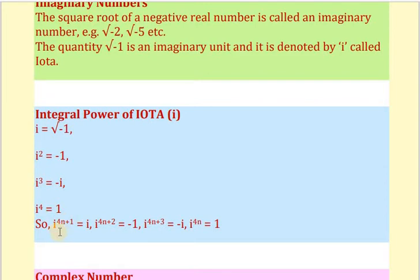Similarly, we can get i to the power 4n plus 1 as i; i to the power 4n plus 2 as minus 1; i to the power 4n plus 3 as minus i; and i to the power 4n as 1.